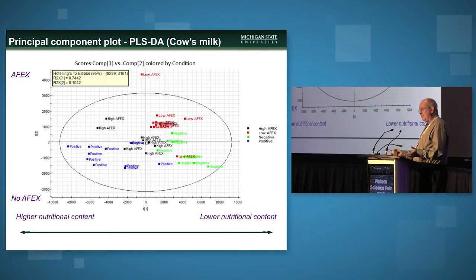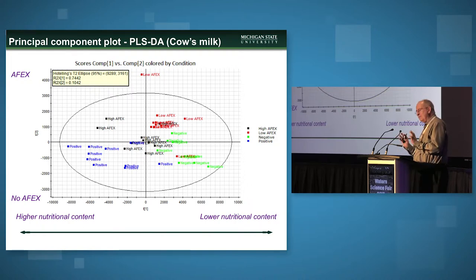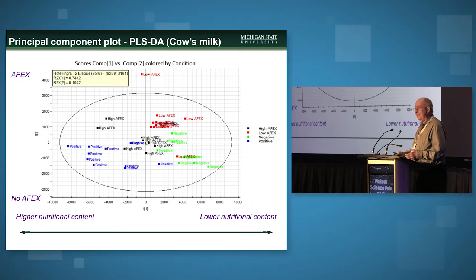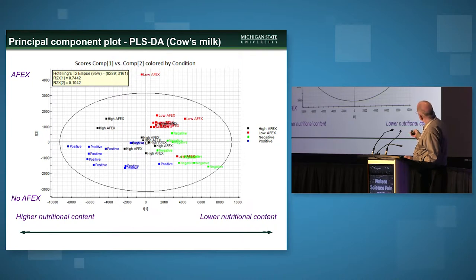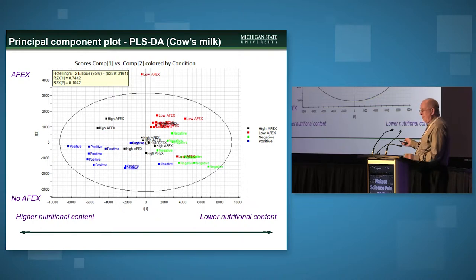We then used Progenesis software to do multivariate statistical analysis. We're challenging our approach to ask whether there are any differences we can see, because we'd like to make the case that it's acceptable to feed this ammonia-treated material to cattle — that it's not going to dramatically change milk or make it inedible. When you generate a two-dimensional PCA scores plot, the positive diets in blue are mostly on the left, largely reflecting the first principal component as a measure of higher nutritional content.